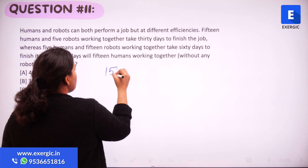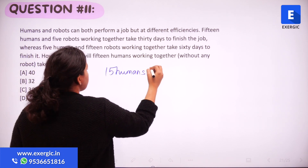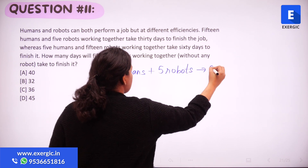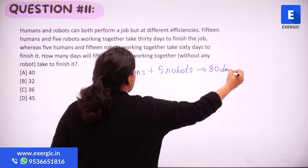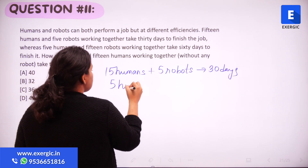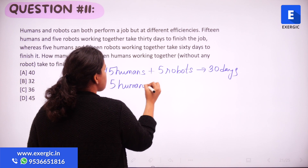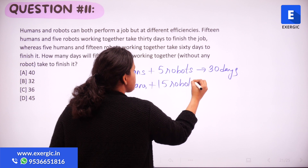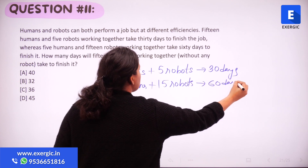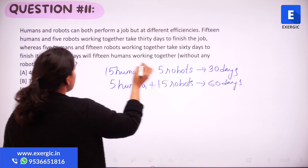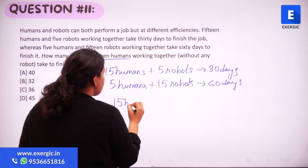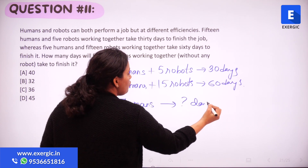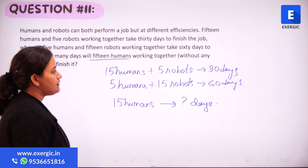So 15 humans plus 5 robots are going to finish a particular work in 30 days, and 5 humans and 15 robots are going to finish the work in 60 days. We want to find out how much time 15 humans take to do the work if there are no robots. This is the question.